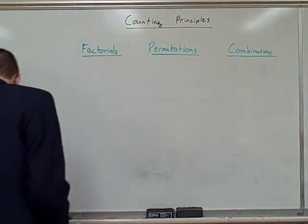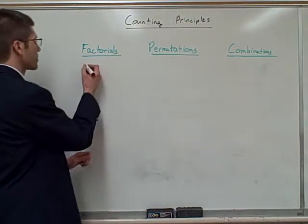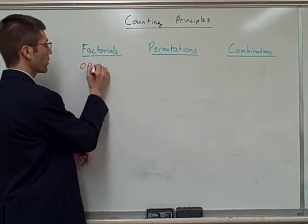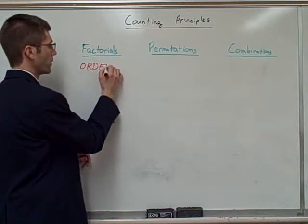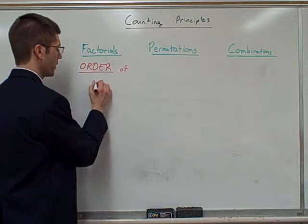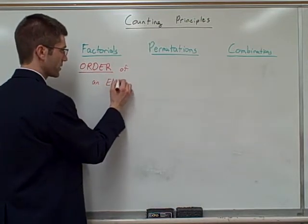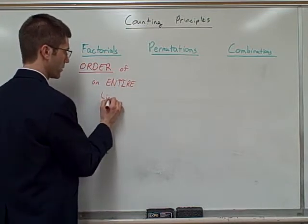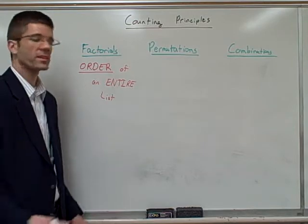For factorials, the most important thing you know is we're going to put an entire list in order. So it's going to be the order, order is important, of an entire list. Five people run a race, we want to know how all five of them could possibly finish.